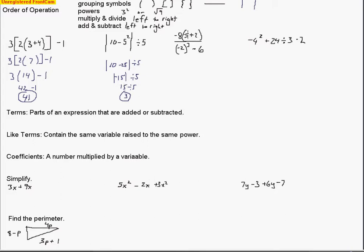Looking at our next one, we have parentheses as a grouping symbol, but the fraction bar represents one as well. I've got to do the work on the top of the fraction and the bottom of the fraction before I do the division. So I did 5 plus 2, which gave me 7. Now I'm going to take negative 2 and cube that — that means negative 2 times negative 2 times negative 2. There's an odd number of negatives, so the answer is going to be negative. Negative 8 minus 6 gives negative 14 after I multiply, giving me negative 56 divided by negative 14.